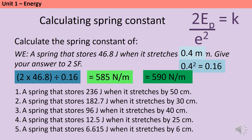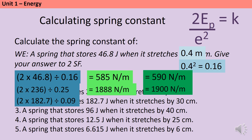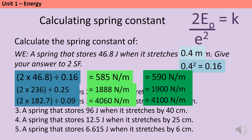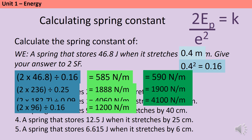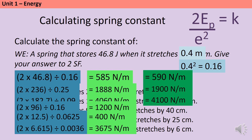Now pause and try these five practice questions. For question one: 50 cm = 0.5 m, 0.5² = 0.25, so k = 2 × 236 / 0.25 = 1888, which rounds to 1900 N/m. Question two: 2 × 182.7 / 0.09 = 4060, rounds to 4100 N/m. Question three: 2 × 96 / 0.16 = 1200 N/m — no rounding needed. Question four: 2 × 12.5 / 0.0625 = 400 N/m. Question five: 2 × 6.615 / 0.0036 = 3675, rounds to 3700 N/m.